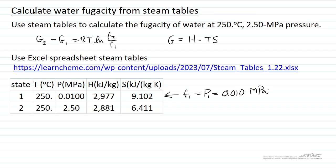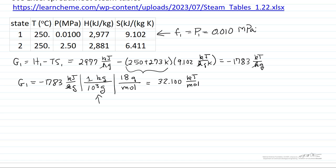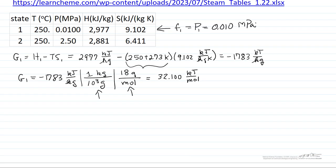So let's calculate then the Gibbs free energy at these two conditions. So you can see I have the definition of Gibbs free energy. Important here that temperature is in Kelvin. Now to use the equation relating Gibbs free energy to fugacity, I have to put Gibbs free energy in terms of kilojoules per mole. So what I've done is convert kilograms to grams. And then for water, 18 grams per mole. So now I have the Gibbs free energy for condition 1 in terms of kilojoules per mole.